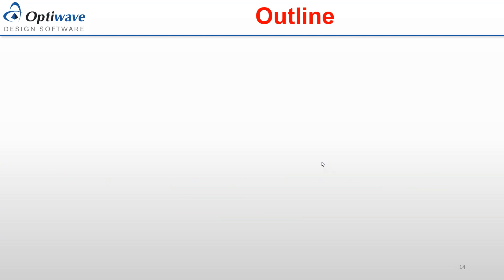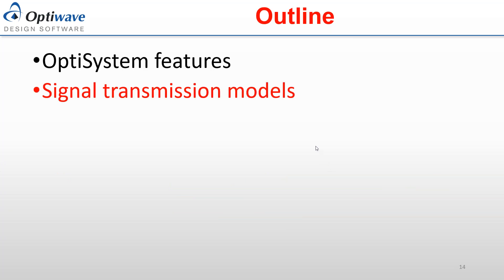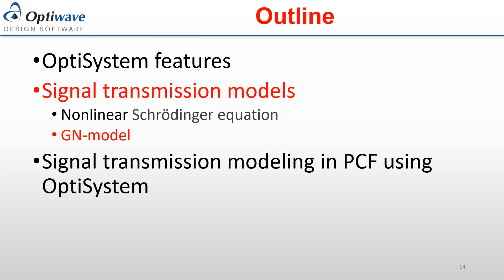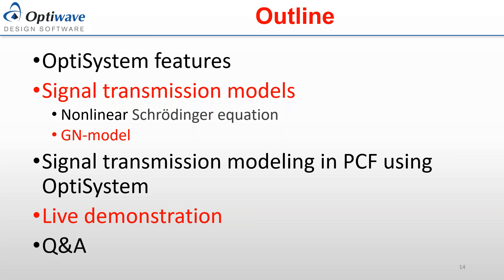In this part of the talk, we're going to discuss some features of OptiSystem, then the transmission models used in OptiSystem — which includes the nonlinear Schrödinger equation and the GN model, which was recently added to OptiSystem. Then I'll talk mainly about the modeling of signal transmission in photonic crystal fiber using OptiSystem, show a live demonstration of different projects related to this, and then open into questions and answers.